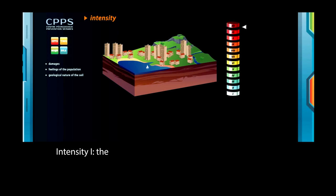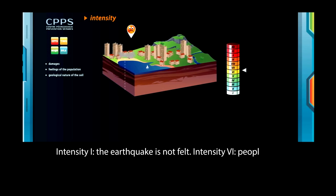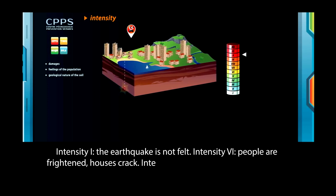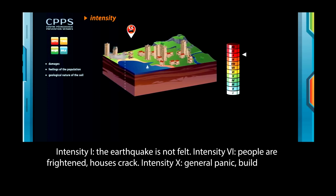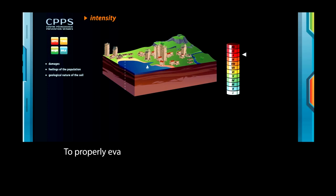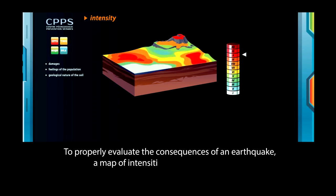Intensity 1, the earthquake is not felt. Intensity 6, people are frightened, houses crack. Intensity 10, general panic, buildings are almost all destroyed. To properly evaluate the consequences of an earthquake, a map of intensities must be constructed.